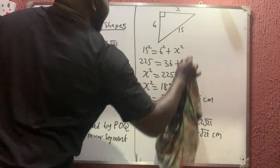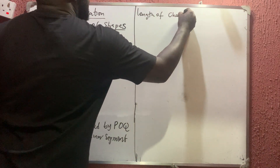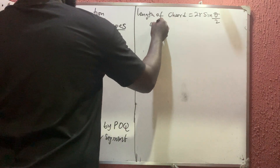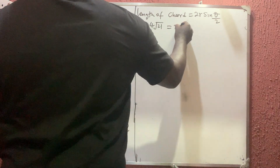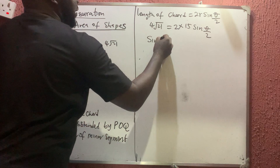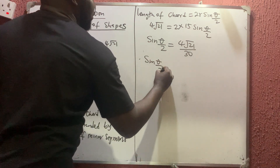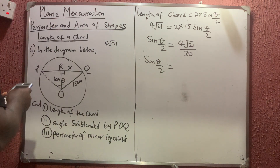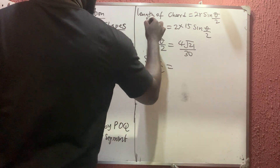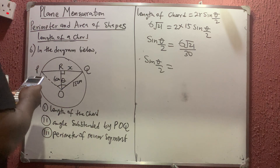We know that the length of a chord is given by 2r sin(θ/2). So: 6√21 = 2 × 15 × sin(θ/2), which gives sin(θ/2) = 6√21 / 30. Simplifying, sin(θ/2) = √21 / 5.